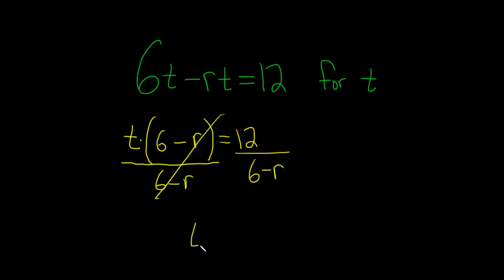Boom, these go away. So you get t equals 12 over 6 minus r.